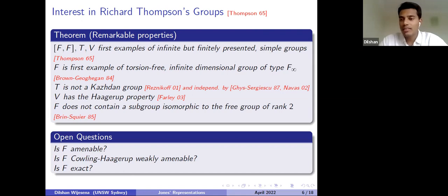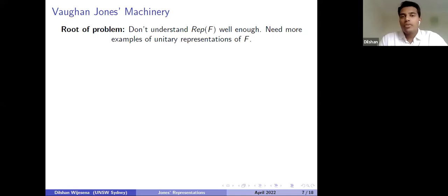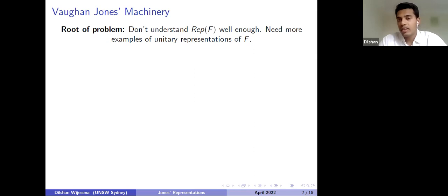The von Neumann problem asks: if a group is non-amenable, must it contain a copy of the free group of rank two? Whether Thompson's group F is amenable or non-amenable remains open today — there is roughly a 50-50 split of opinion. Even more elementary questions remain open, such as whether F is weakly amenable or exact. A major reason these analytical properties are challenging to prove is that the representation theory of F is not well understood. Previously only three known families of irreducible representations of F existed, so building more families is important for developing better intuition.